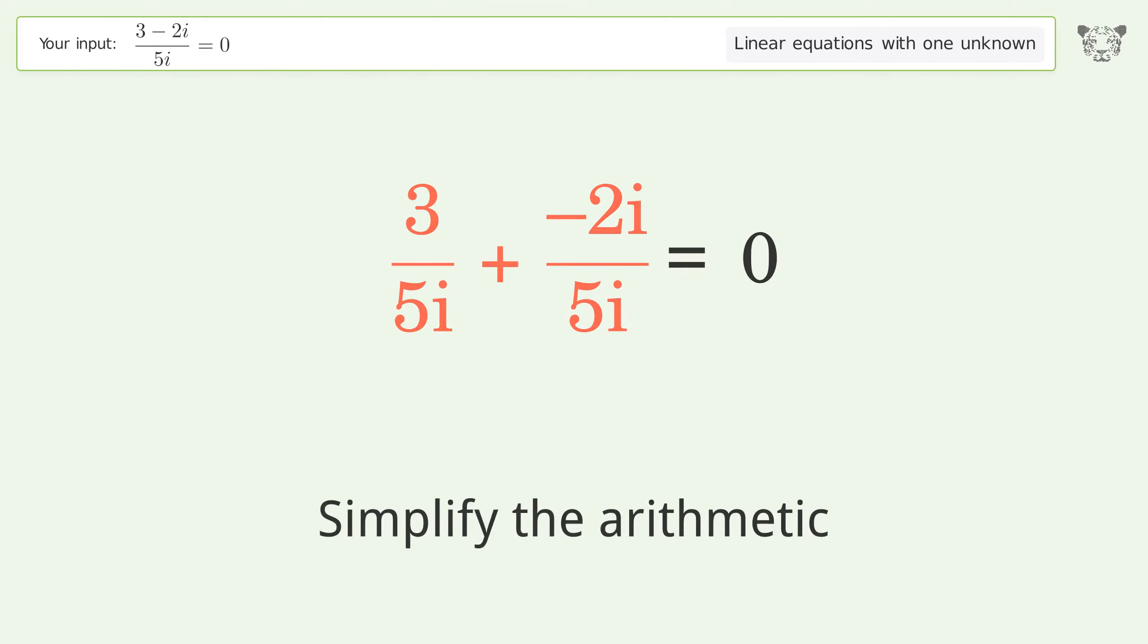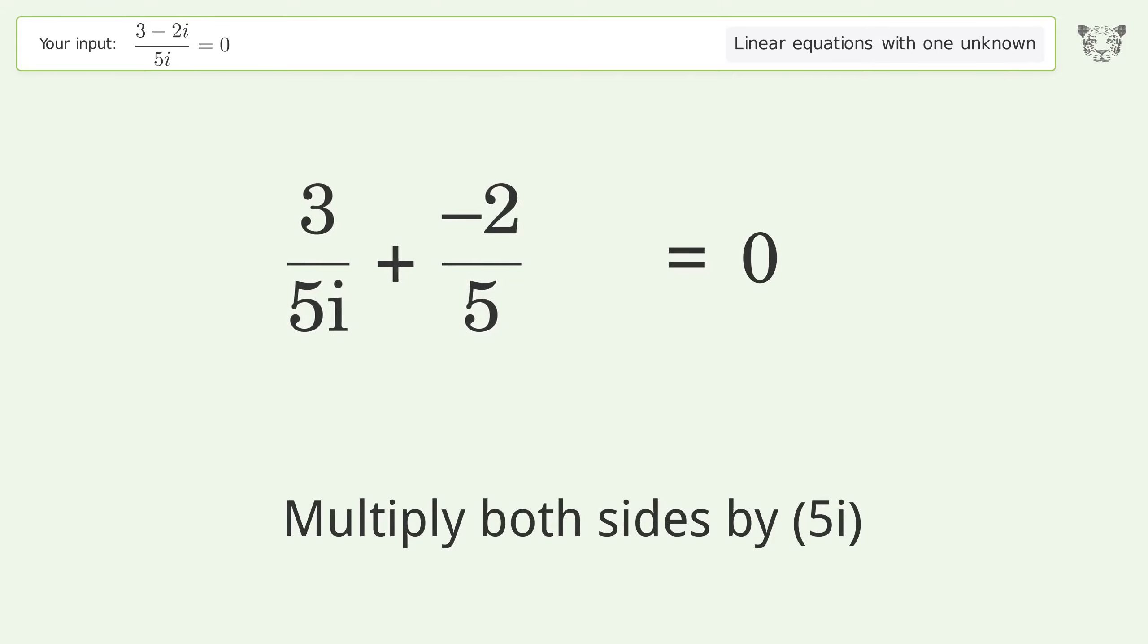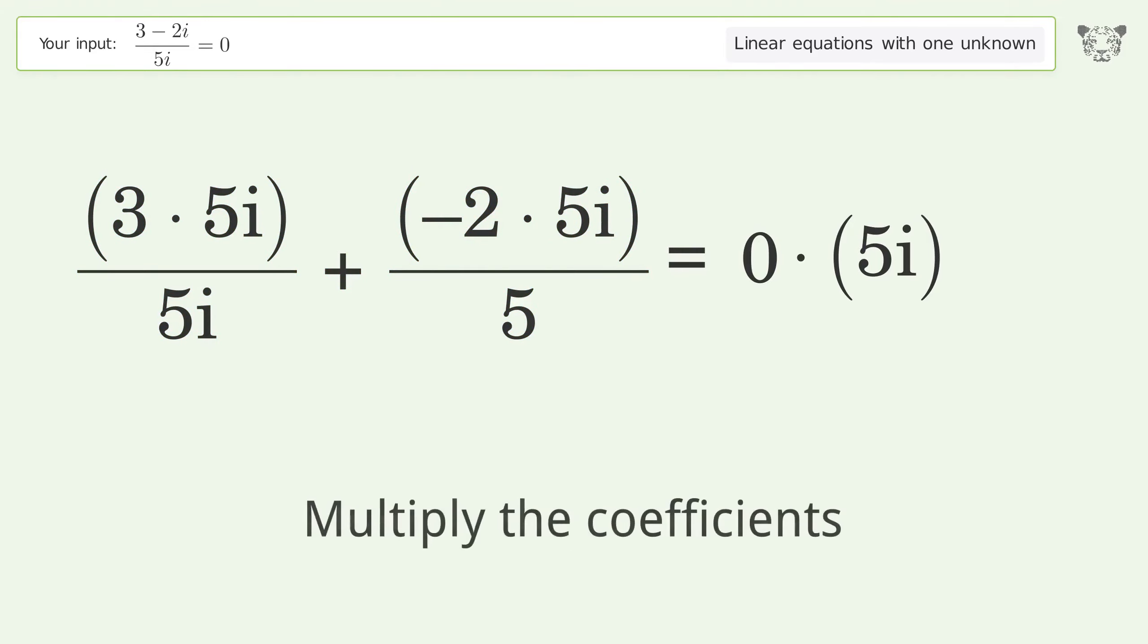Simplify the arithmetic. Isolate the i, multiply both sides by 5i. Expand the parentheses. Multiply the coefficients.